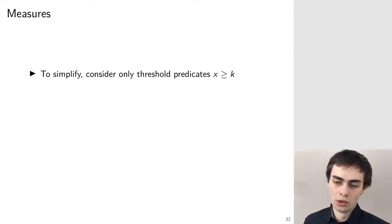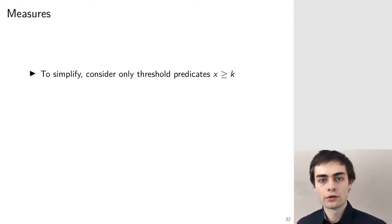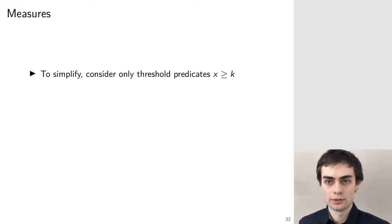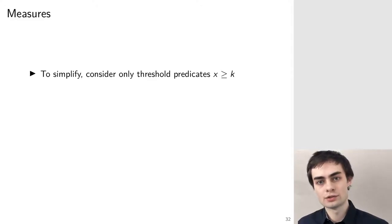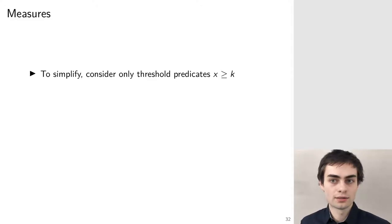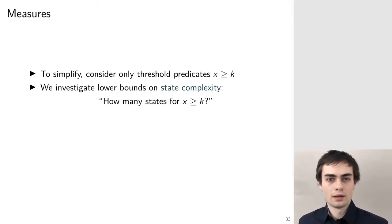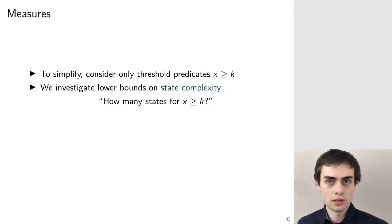We want to talk about space complexity and to simplify the questions we only consider threshold predicates. A natural question is how many states you need for a predicate with a given length; here we consider threshold predicates where the length is simply the size of the parameter k. We investigate lower bounds on the state complexity — so how many states do you need to decide this predicate?